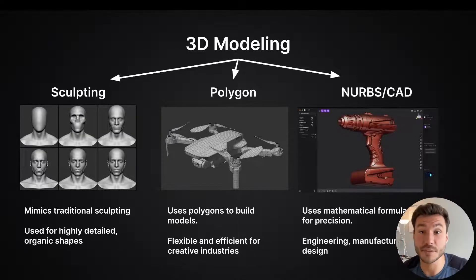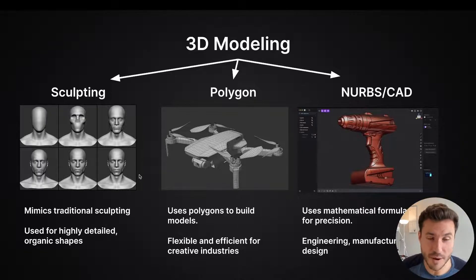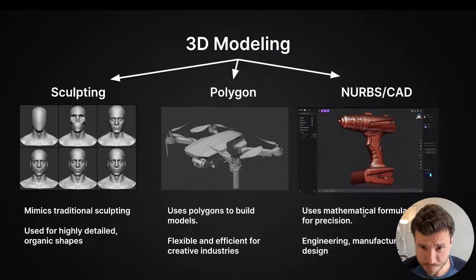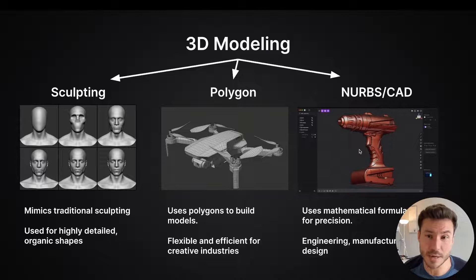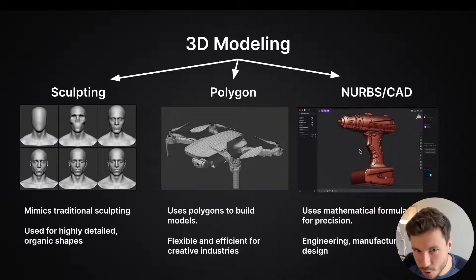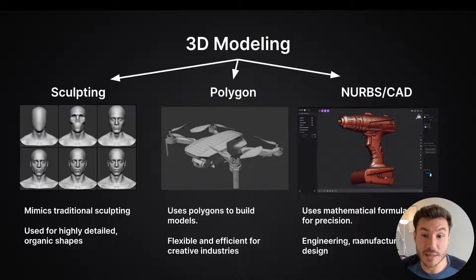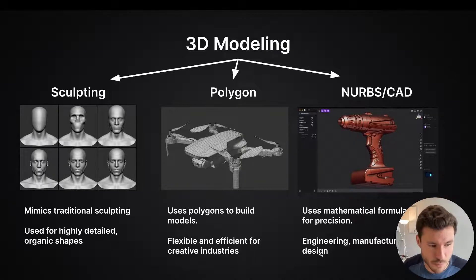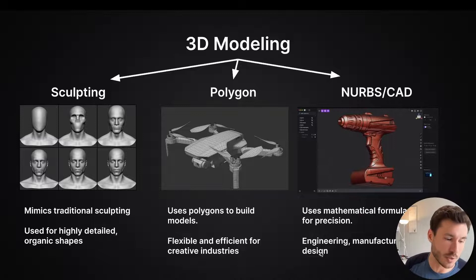Then we have NURBS and CAD, which is very different from everything else, because NURBS uses mathematical formulas for super precision. NURBS and CAD modeling is mostly used in engineering and manufacturing, where precision and working exactly is very important. It's not suitable for production manufacturing use in polygon modeling. NURBS CAD is also used in design — product design, automotive, aerospace — again because of the precision, which we will cover shortly.